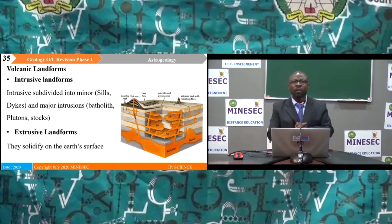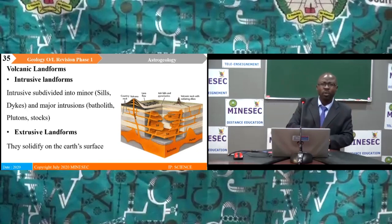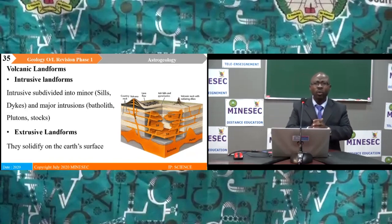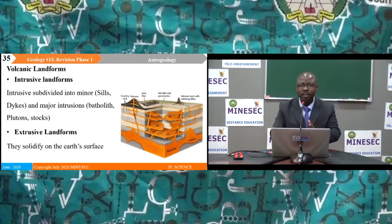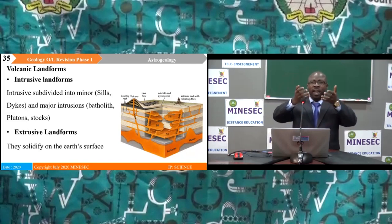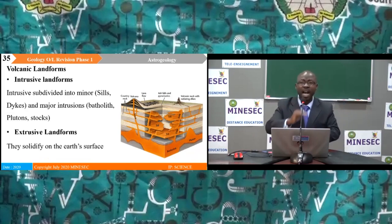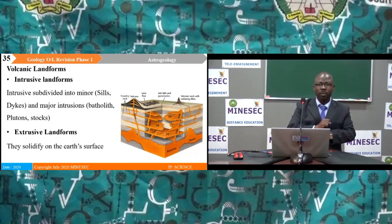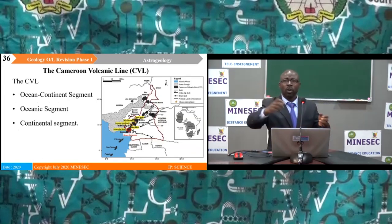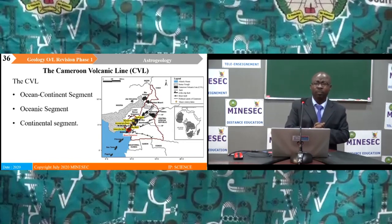There are two major types of landforms accompanying volcanic eruption. Intrusive landforms form as magma solidifies within the Earth, and include sills, dikes, laccoliths, plutons and stocks. Extrusive landforms form when magma reaches the surface and solidifies. A typical example of an extrusive landform is the Cameroon volcanic line, which is a series of volcanoes.